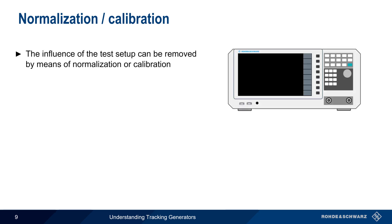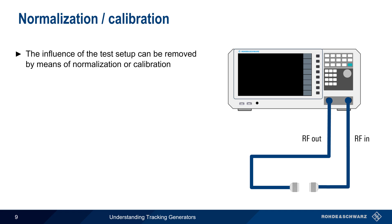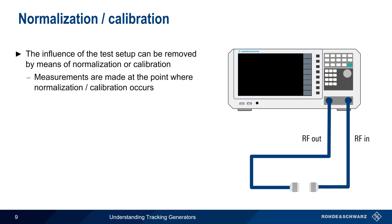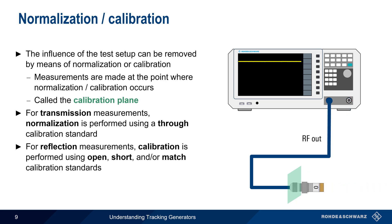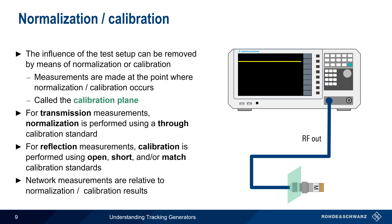Normalization and calibration are important for all network measurements because they can remove the effect or influence of the measurement setup — for example, any cables, connectors, etc. between the device under test and the analyzer. By performing normalization or calibration, measurements are effectively made at the point where normalization or calibration occurs, commonly called the calibration plane. For transmission measurements, normalization is performed by placing a through standard at the measurement point. For reflection or one-port measurements, open, short, and match calibration standards are placed at the connection point. Measurements are then made relative to these normalization or calibration results.